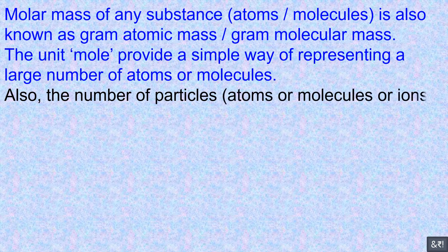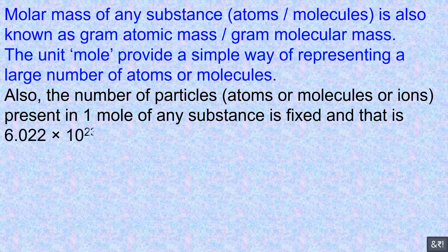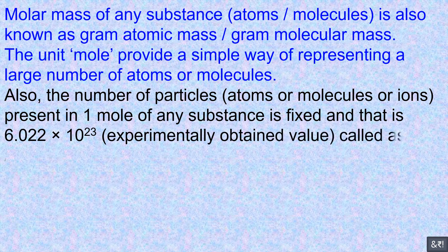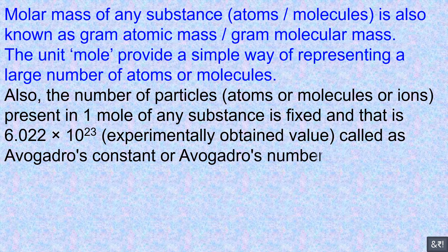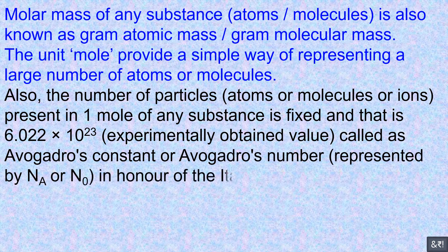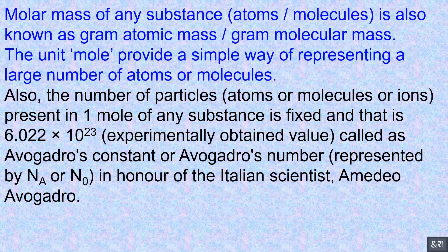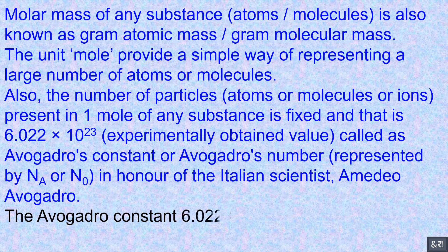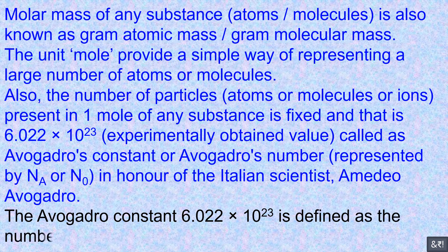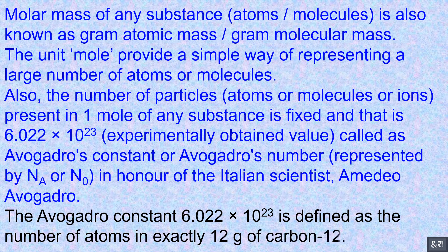The number of particles present in one mole of any substance is fixed and that is 6.022 × 10²³, called Avogadro's constant, or Avogadro's number, in honor of the Italian scientist Amedeo Avogadro. The Avogadro constant 6.022 × 10²³ is defined as the number of atoms in exactly 12 grams of carbon-12.